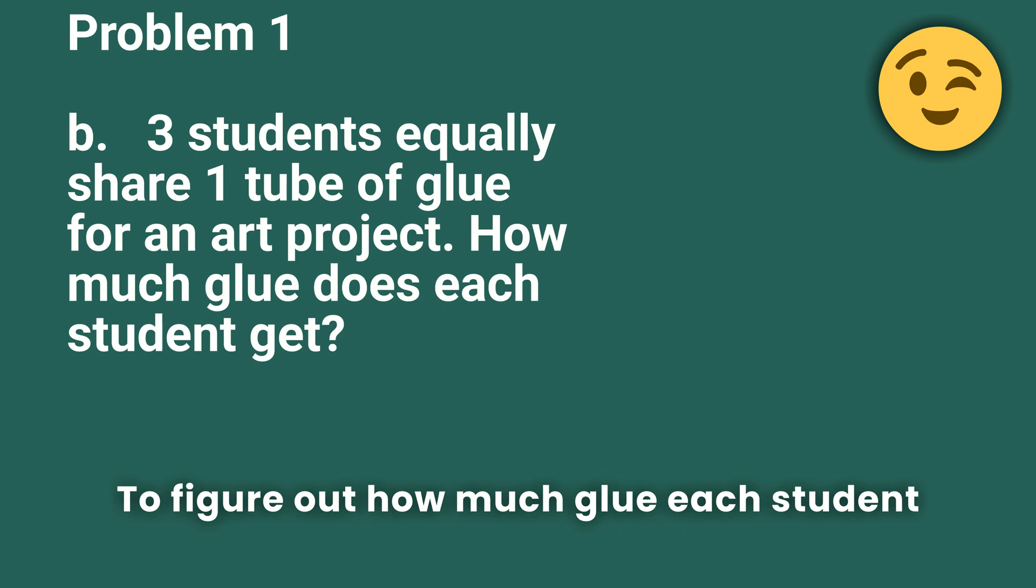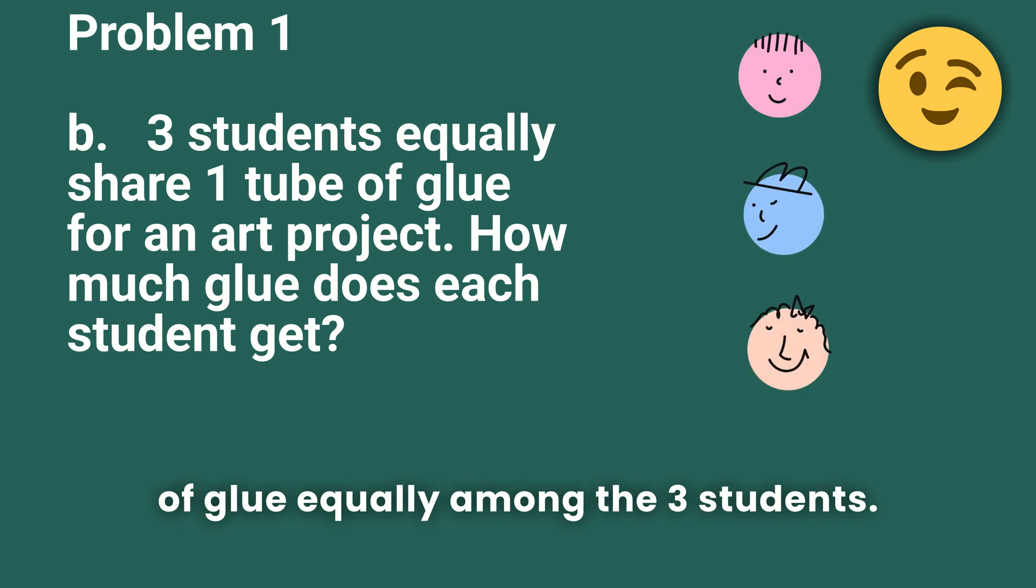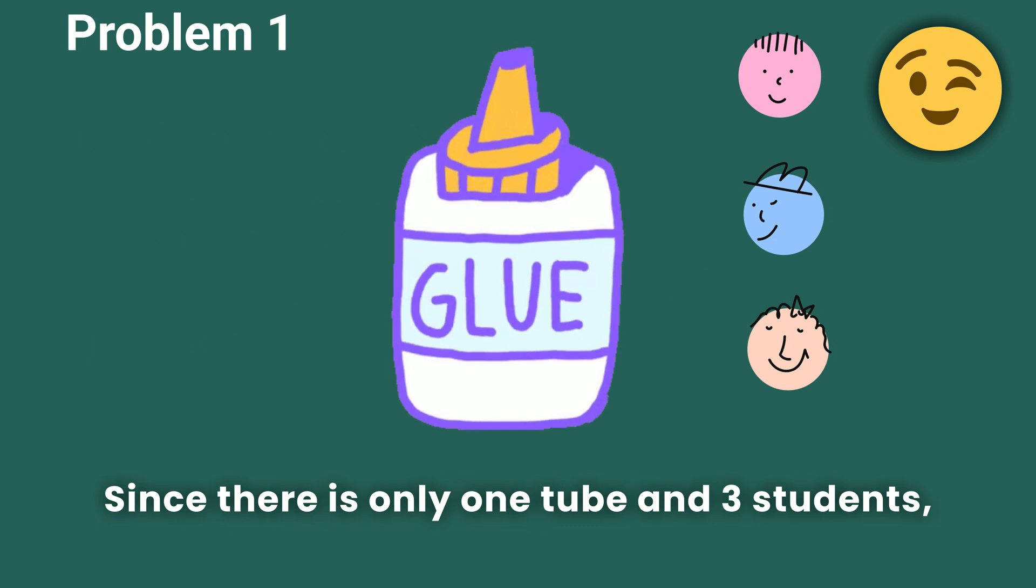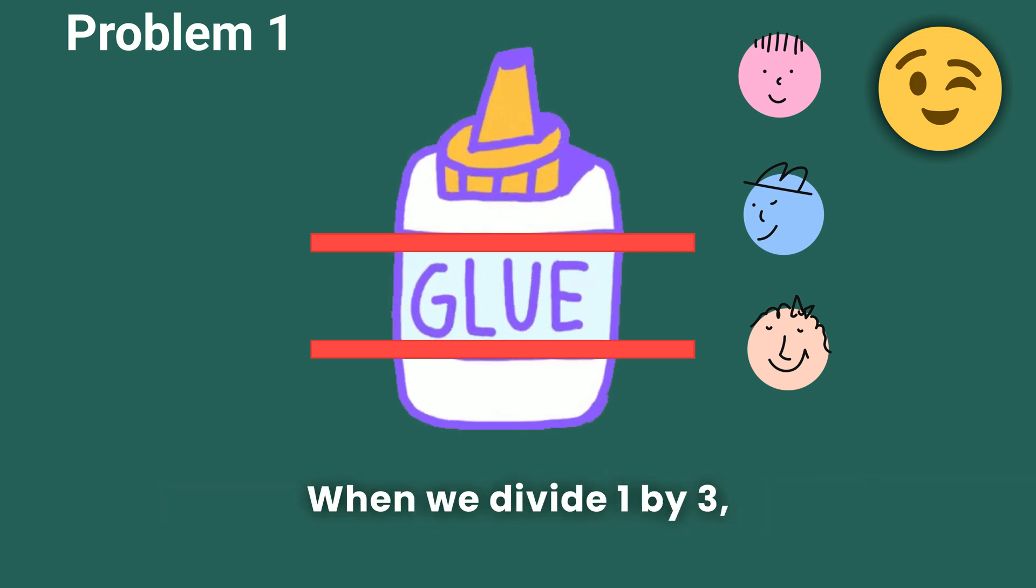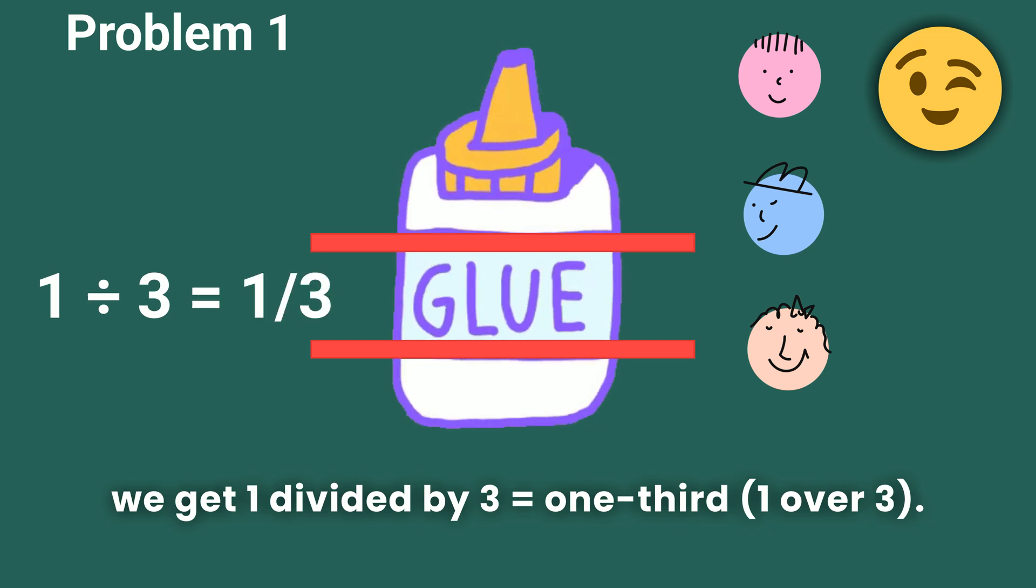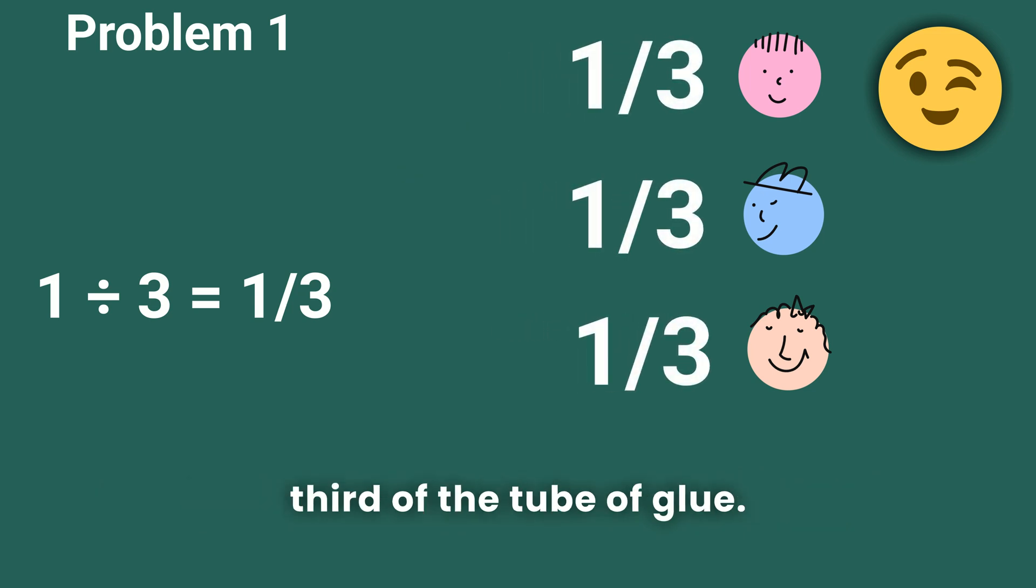To figure out how much glue each student gets, we need to split the one tube of glue equally among the three students. Since there is only one tube and three students, we divide the glue into three equal parts. When we divide one by three, we get one divided by three equals one third, one over three. This means each student gets one third of the tube of glue.